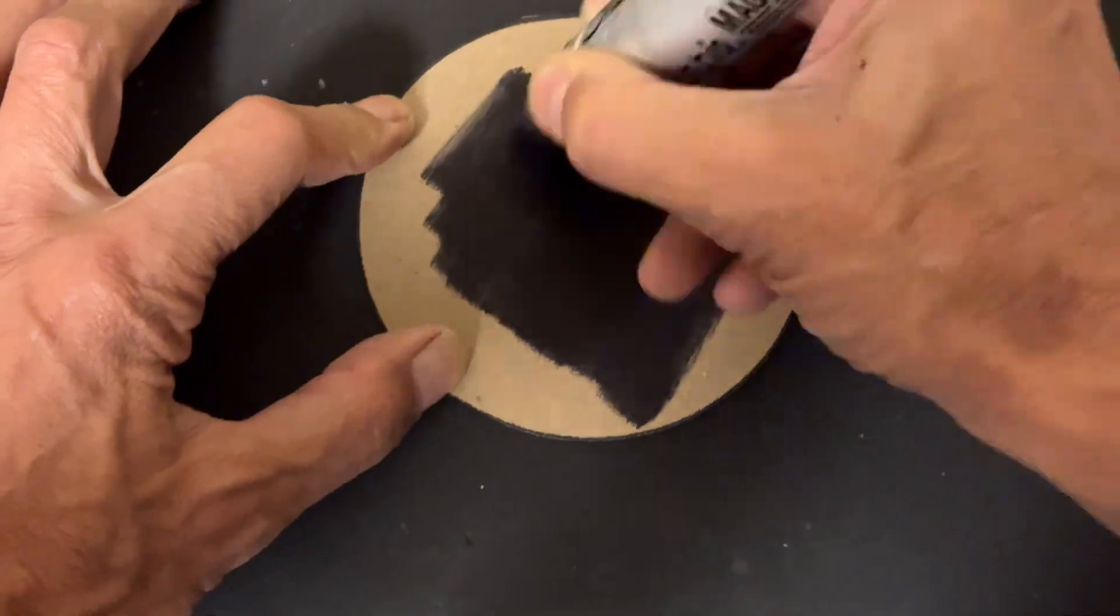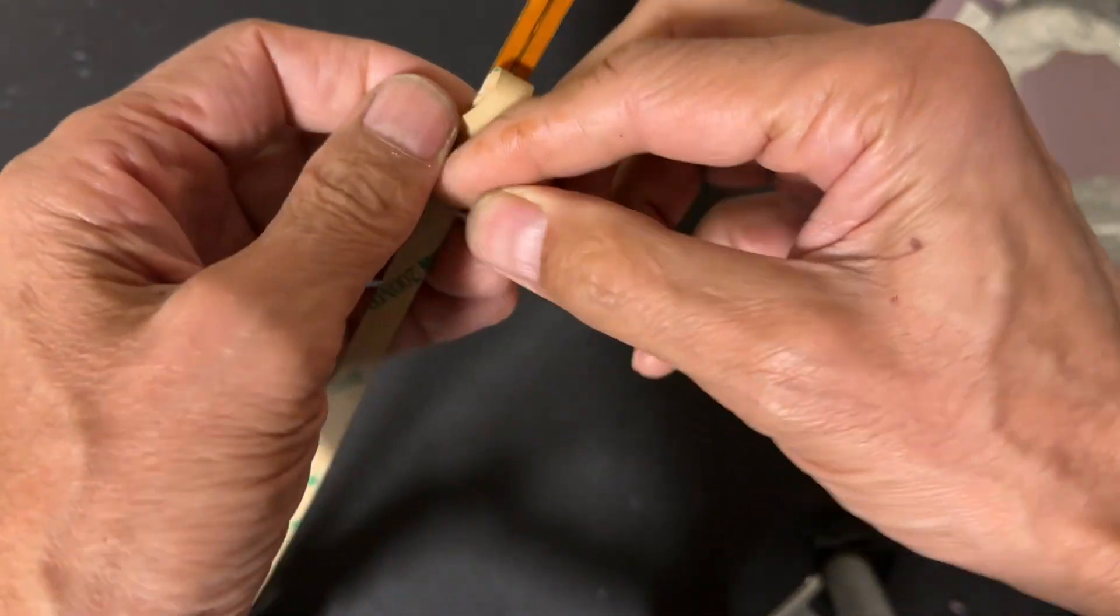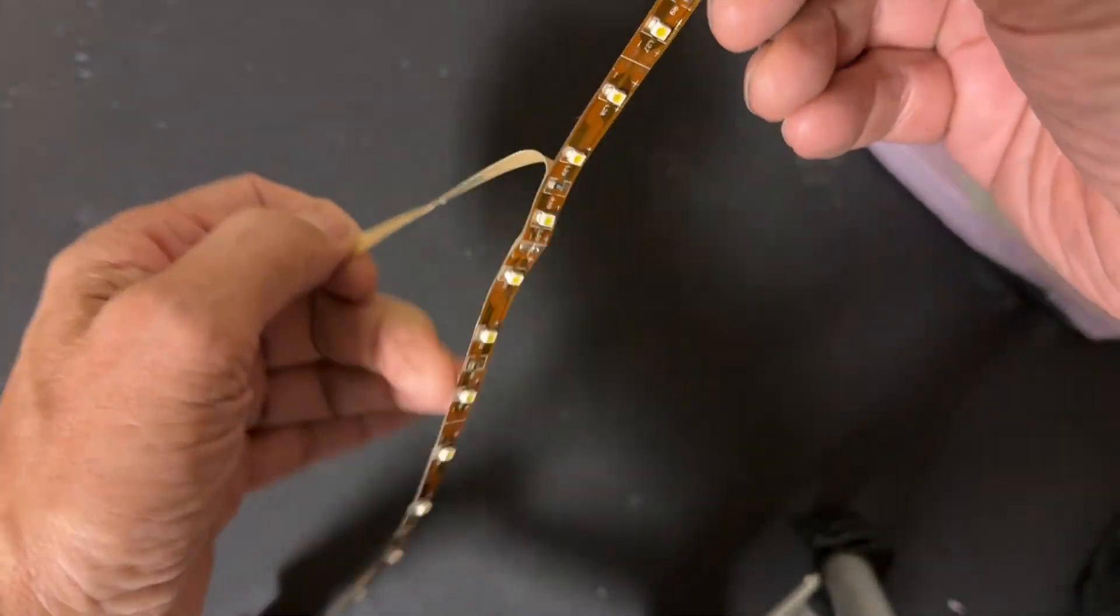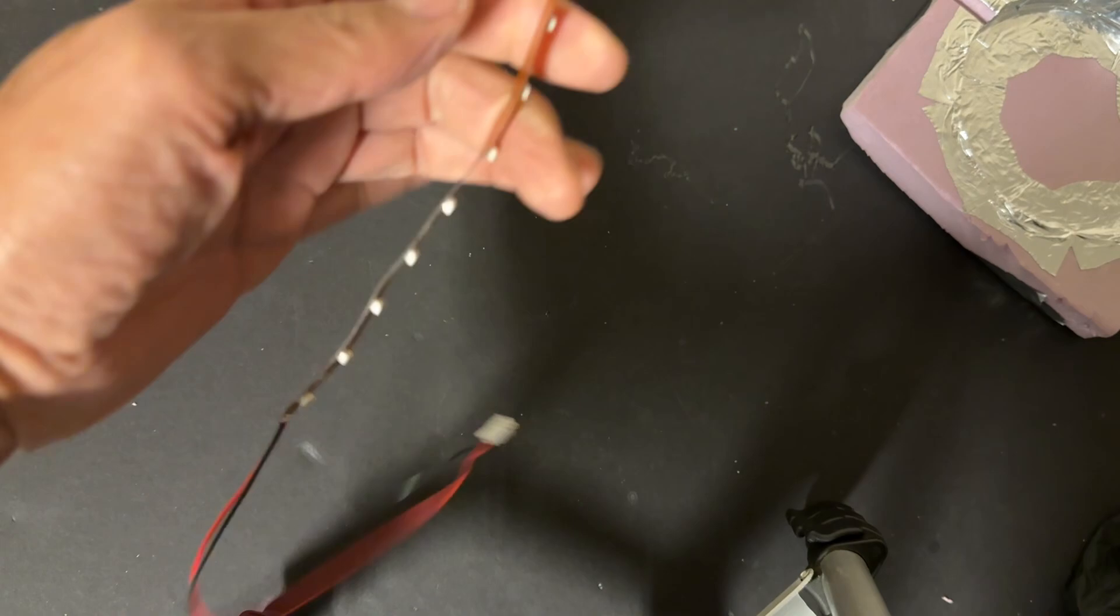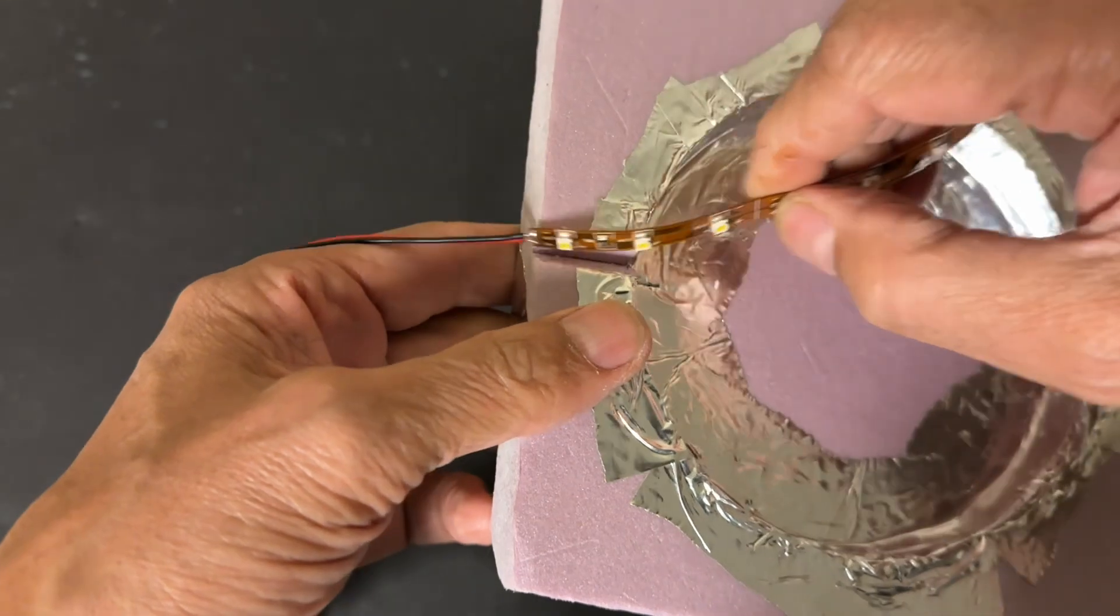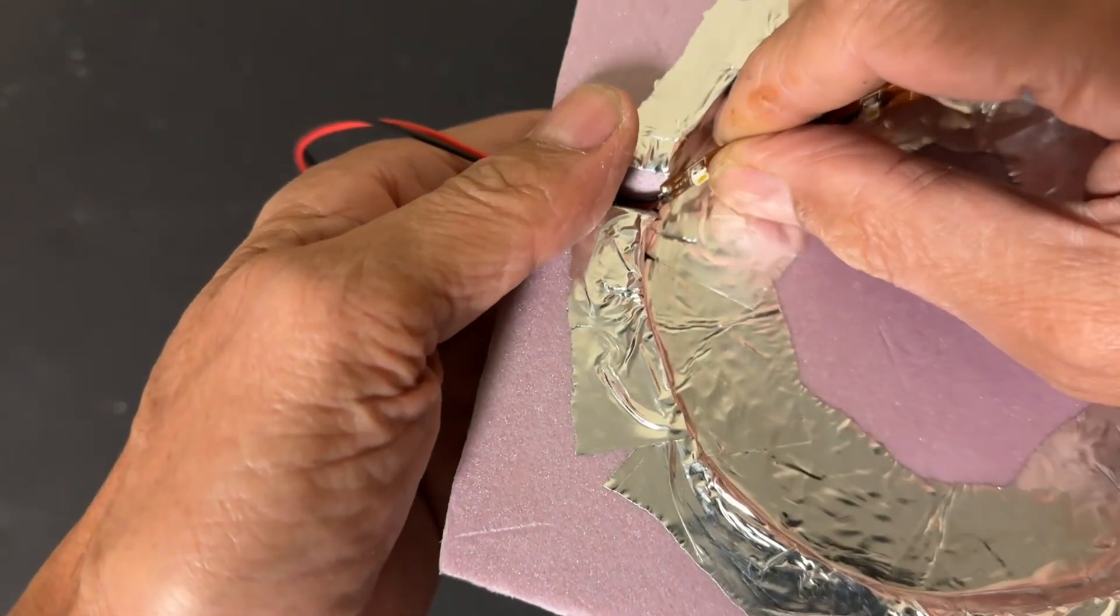Now we're going to stick on the LED lights on the inside of the well that we've created in the styrofoam. This is easier said than done but the aluminum tape definitely makes it easier to stick it on. I've made a small divot in the styrofoam for the wires.